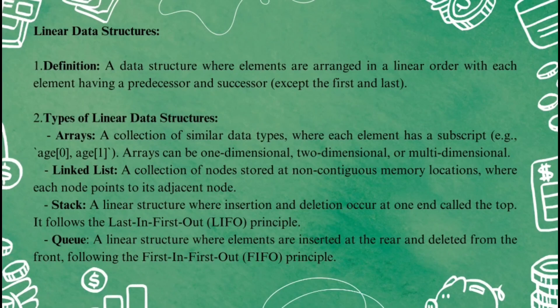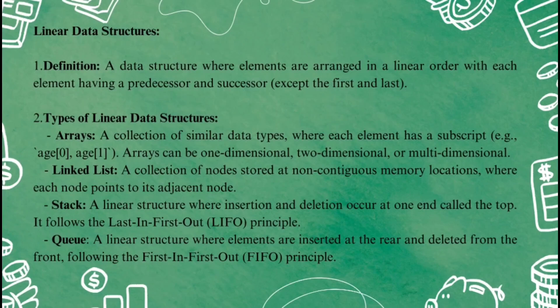Stack: a stack is a linear structure where you can only add and remove items from one end, called the top. It follows the last in, first out principle. Imagine stacking plates in a cafeteria — the last plate you put on top is the first one you take off when you need it. Queue: a queue is like standing in line for a ride at an amusement park. People join the line at the rear, and when it's time to go on the ride, people leave from the front. This follows the first in, first out principle.